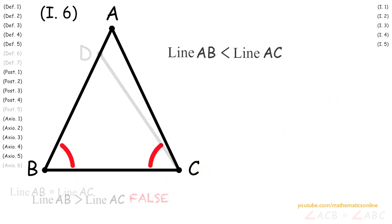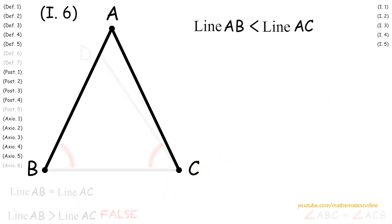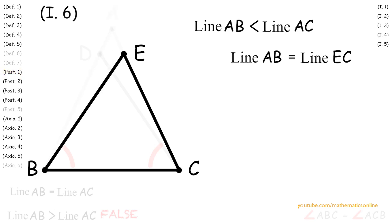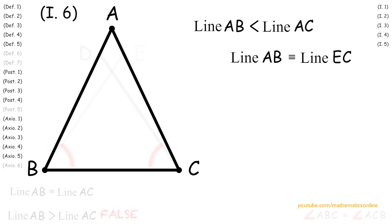Next, let's assume that line AB is less than line AC. Since line AB and line AC are two unequal lines, we can use Proposition 3 to make the shorter line AB congruent to line EC. We use Postulate 1 to create line EB.